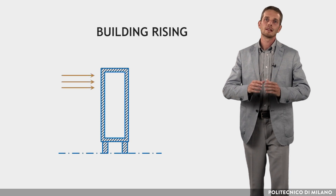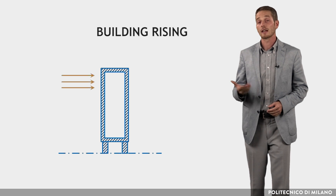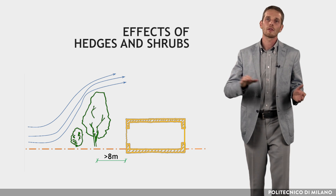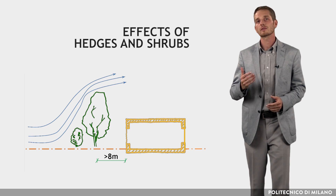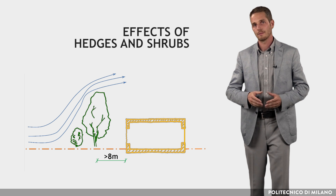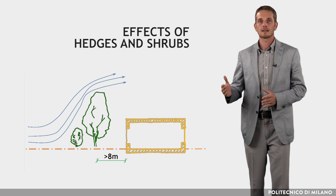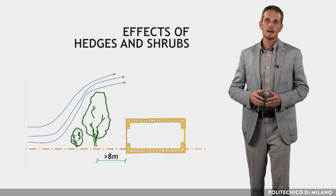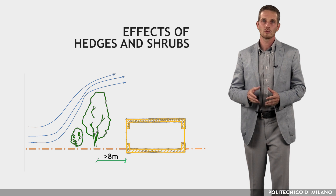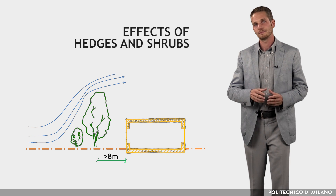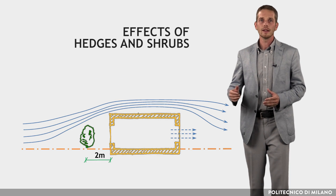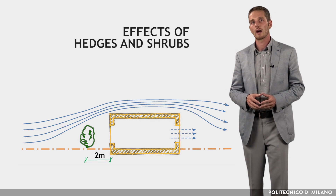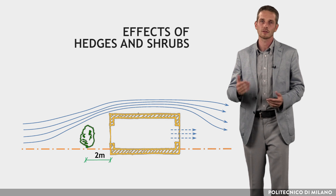Rising the building on stilts is an advantage as it catches more wind. Hedges and shrubs deflect air away from the inlet openings and cause a reduction in air motion. These should not be planted inside a distance of about 8 meters from the building. However, air motion in the leeward part of the building can be enhanced by planting low hedges at a distance of 2 meters from the building.